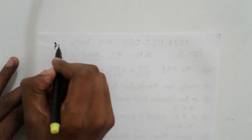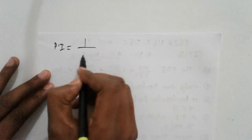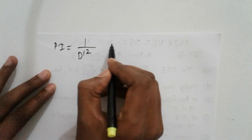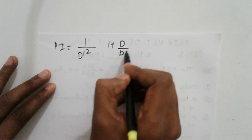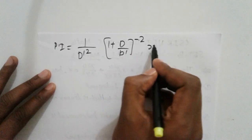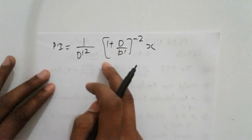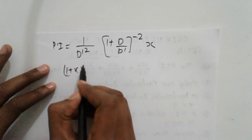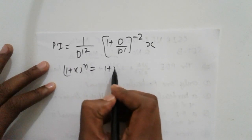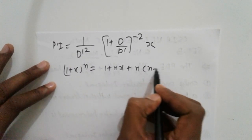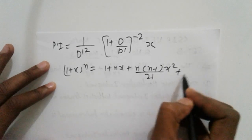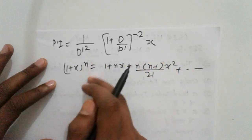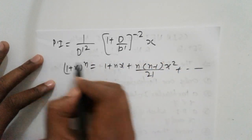With D'² taken as common, the particular integral becomes 1/D'² · (1 + D/D')^(−2) · x. Expanding using the binomial theorem — recall 1/(1+x)² = 1 − 2x + 3x² − ... — we apply this expansion to get 1/D'² · (1 − 2D/D' + ...) · x.